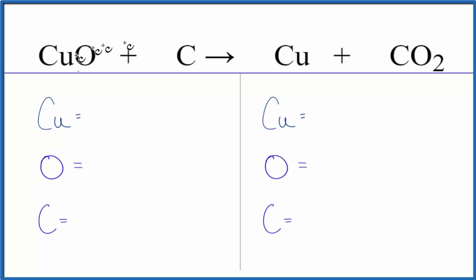Let's count the atoms up on the reactant side of the equation first. We have one copper, one oxygen, and one carbon. That was easy.